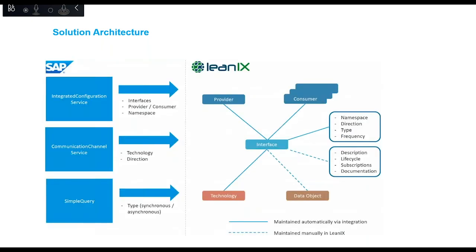Here is an overview of the data we fetch from SAP: the provider/consumer information, the namespace, the technology, the direction, and the type of the interfaces — whether synchronous or asynchronous. With LinaX, we have the possibility to extend or enhance the information with further enterprise information like data objects being transferred. Some information we want to make sure is also maintained automatically, but at the moment we still need to manually maintain some of this information within LinaX.